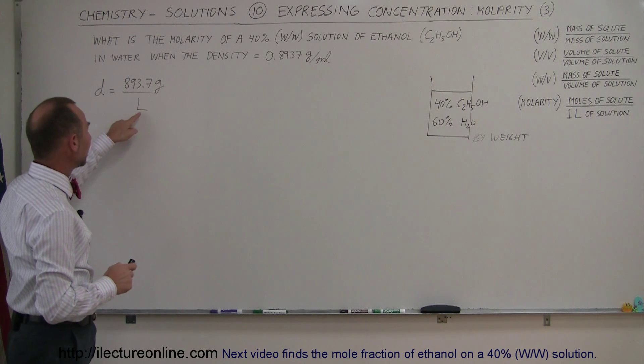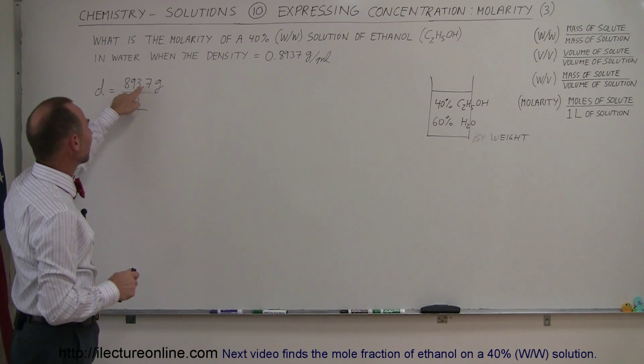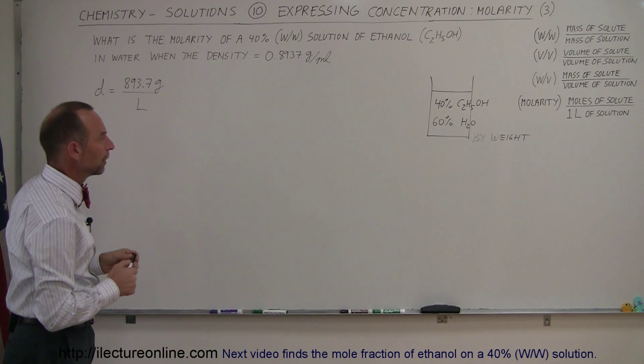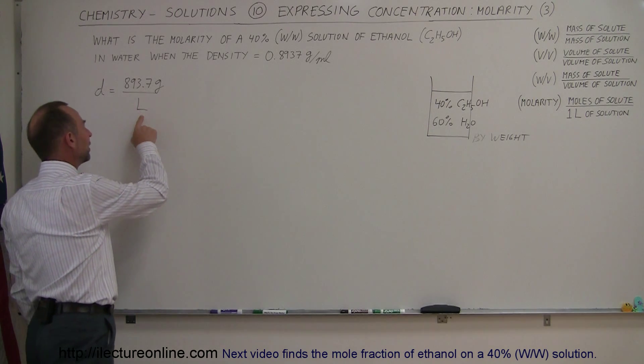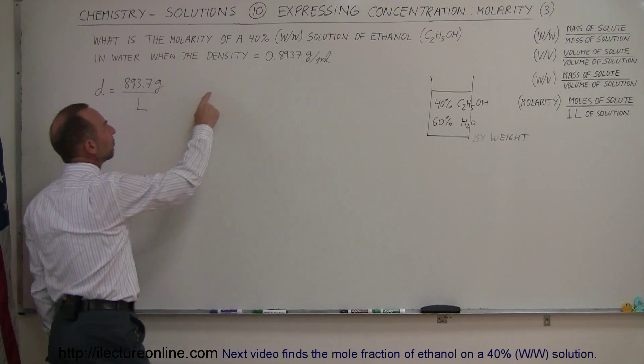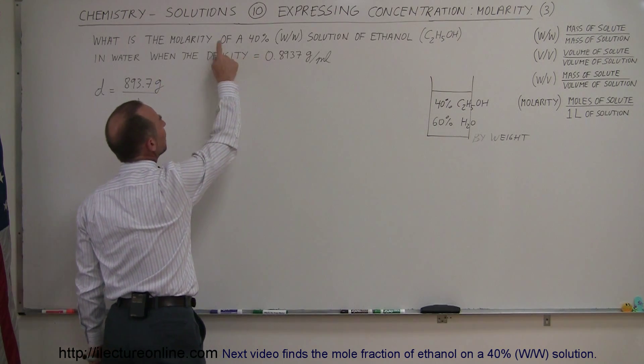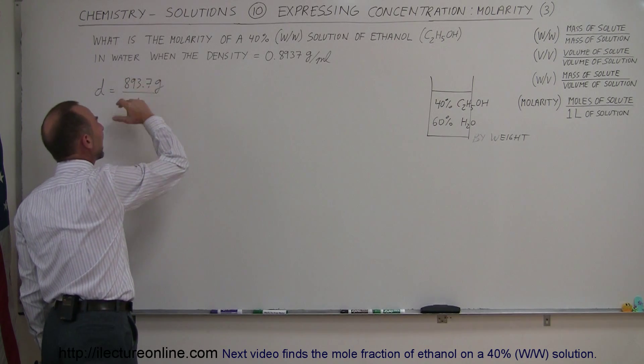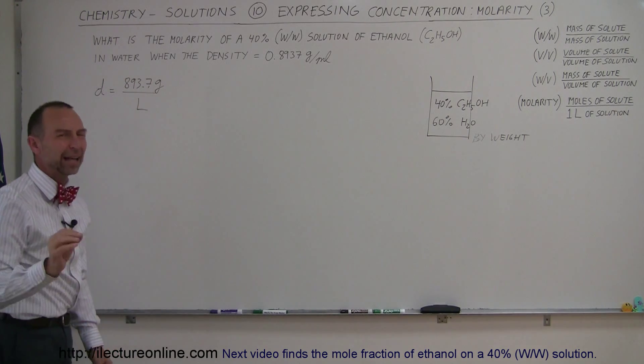Secondly, we can then assume that if we have one liter of the solution, we'll have this many grams of the solution. So if we have one liter, we have this many grams of solution and 40% of that must be ethanol. That means 40% of this number will be ethanol in a liter of the solution, and that's where we start.